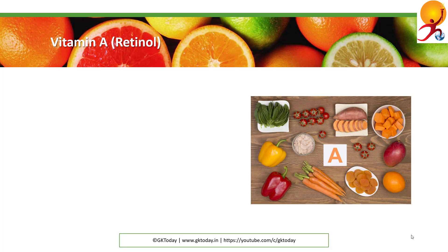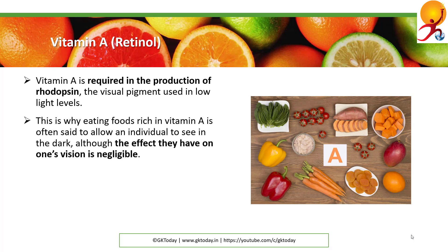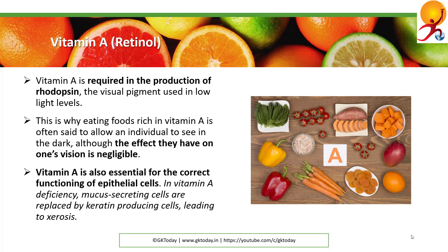Vitamin A, or retinol. Vitamin A is required in the production of rhodopsin, the visual pigment used in low light levels. This is why eating foods rich in vitamin A is often said to allow an individual to see in the dark, although the effects are usually minimal. Vitamin A is also essential for the correct functioning of epithelial cells. In vitamin A deficiency, mucus-secreting cells are replaced by keratin-producing cells, which leads to xerosis.